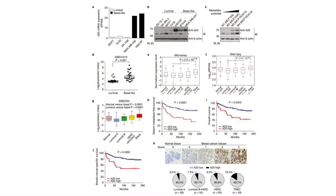Now let's move on to figure one. The main point of the experiments in figure one was to show that A20 levels were highly expressed only in highly metastatic breast cells. They found high A20 protein and mRNA expression through several datasets and experiments in triple negative breast cancer and breast cells with high metastatic potential. Furthermore, high A20 levels were associated with poor patient survival.